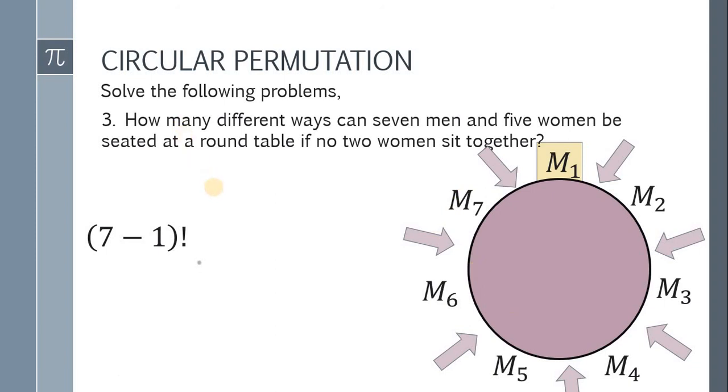Therefore, we have seven permute five different ways para mamili yung five women dun sa seven spaces. Simplify, we have a total of 1,814,400 different ways para may upop yung seven men and five women in a round table, and no two women sit together. And we're done.